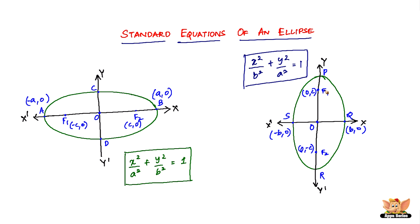For the vertical ellipse, the coordinates of foci F1 and F2 are zero comma c and zero comma minus c respectively. F1 lies on the y-axis so the x-coordinate is zero, and since it lies on the positive direction of the y-axis, c is positive. F2 lies on the negative direction of the y-axis so it is zero comma minus c. The major axis is the line that passes through the foci, which in this case is vertical.